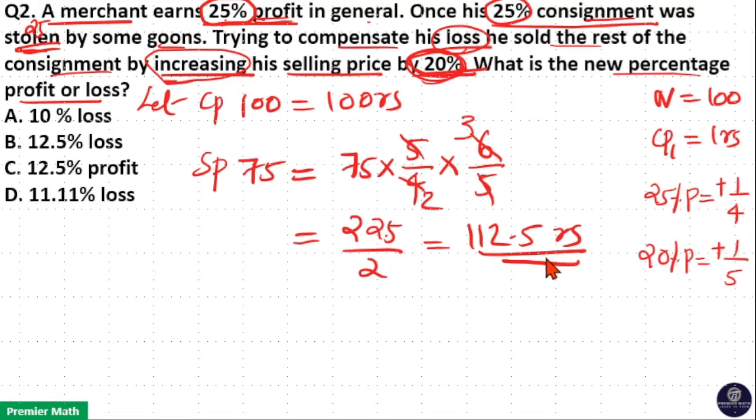So selling price is equal to 112.5 rupees. Now difference between cost price and selling price is equal to 112.5 minus 100, that is 12.5. So 12.5 percentage. Option B is your answer. Because selling price is more than the cost price, so there is profit. So 12.5 percentage profit.